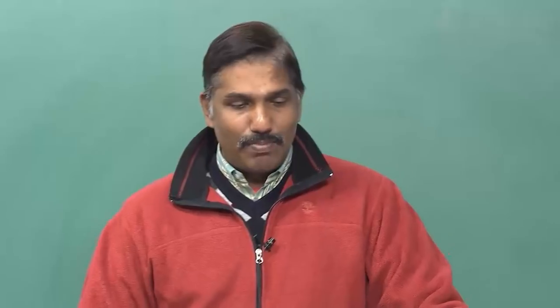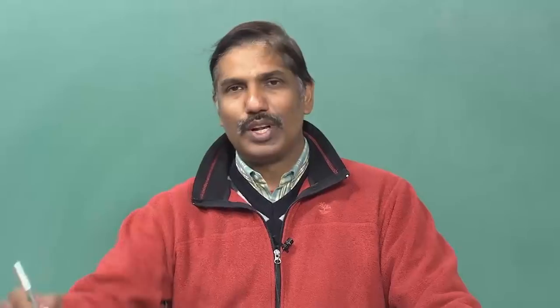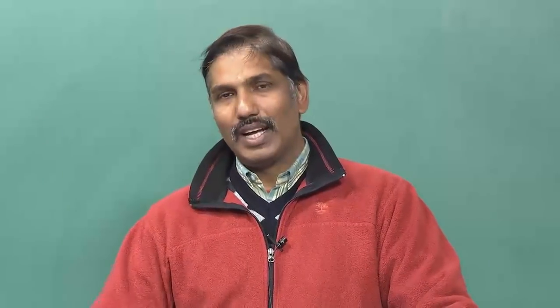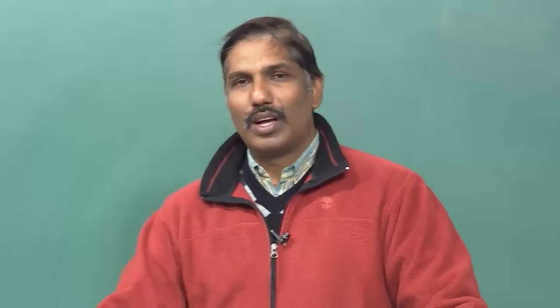In the production and consumption cycle, you have 4 steps: production, distribution, consumption and recovery. Production is producing. Distribution is how efficiently you are going to distribute the product from one place to the rest of the places. When the customer consumes the product, what is the residue left?